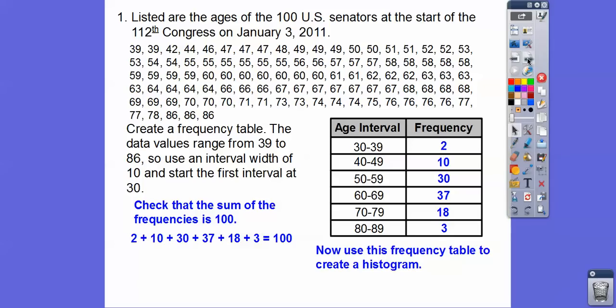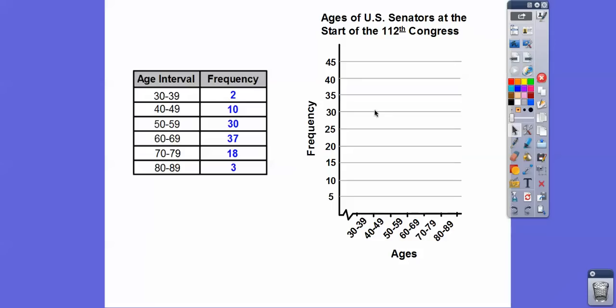And how many are in the 40s right here? It's all of these right here. Already counted them up. There's 10 of them right there in the 50s. There's 30 of them. There's 37 of them in the 60s. Yowie. And there's 18 in the 70s. And then finally, there's some 80s in there. So there's three of them in the 80s. So we're going to check that the sum of these frequencies adds up to 100. So we're going to add all these up and make sure that they do add up to 100. And they do.